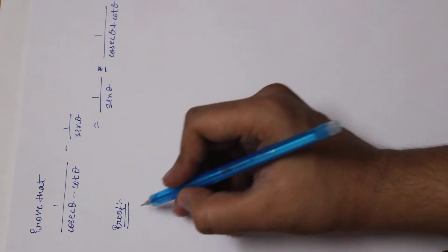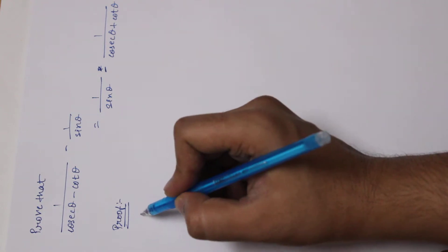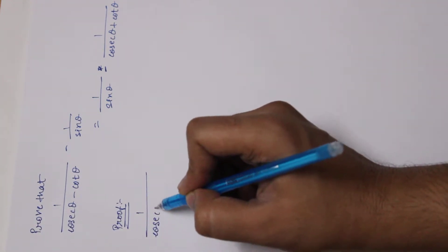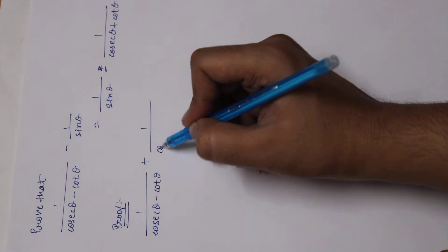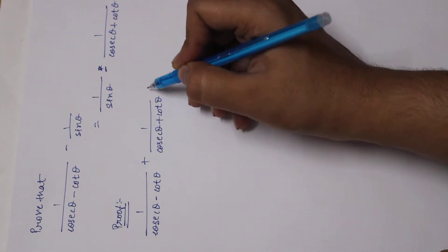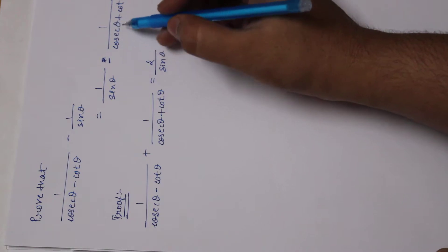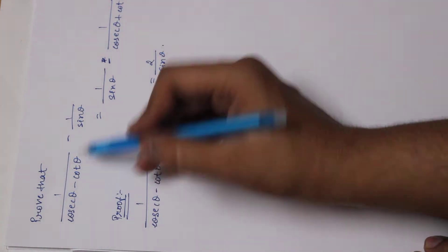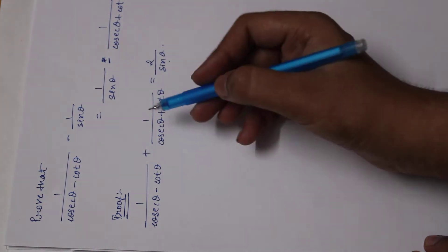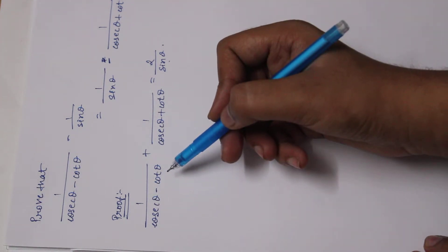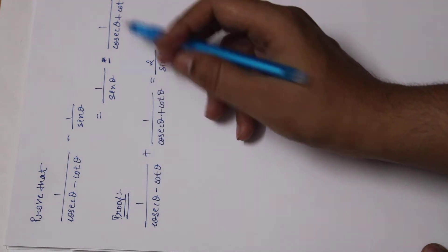Rather than proving 1 upon cosec theta minus cot theta minus 1 upon sin theta directly, I'll prove that 1 upon cosec theta minus cot theta plus 1 upon cosec theta plus cot theta equals 2 upon sin theta. I did this by taking the minus 1 upon cosec theta plus cot theta part to the LHS and taking 1 upon sin theta negative to the RHS, so it becomes 2 upon sin theta on the RHS.